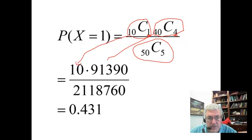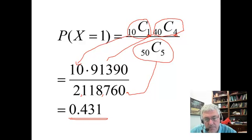You do the math and you get 0.431. So there's a bit less than a 50% chance of getting a poison pill in this way.